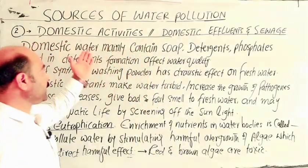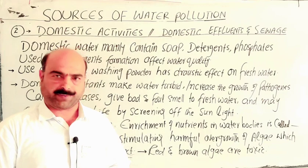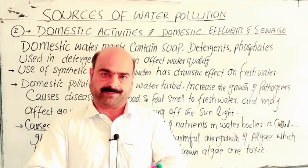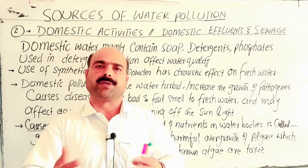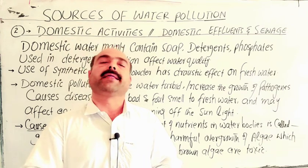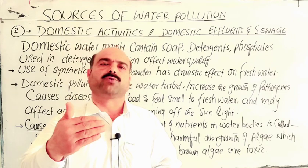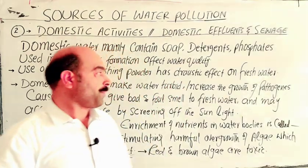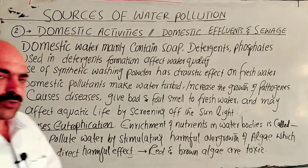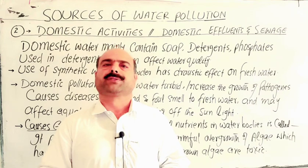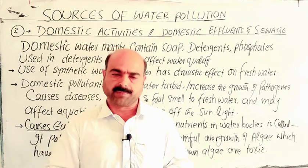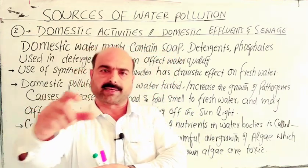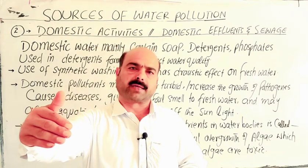Water pollution from domestic activities refers to our household activities — daily routines at home. These include cleaning, washing clothes, furniture cleaning, and similar activities. From these activities, pollutants and pollution-causing materials enter the water and can cause various diseases.